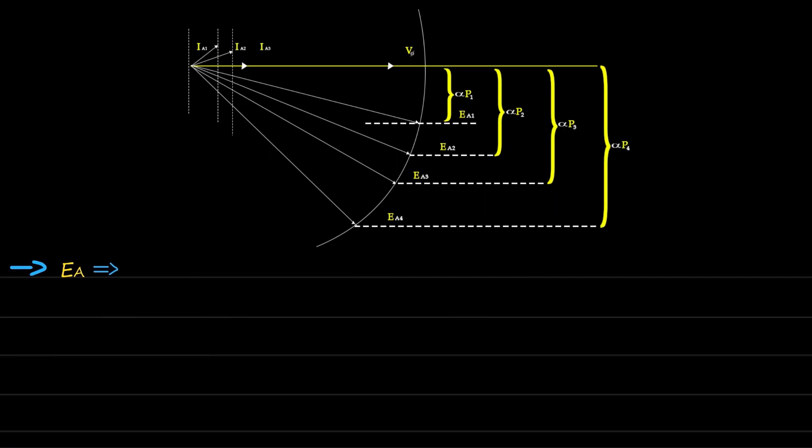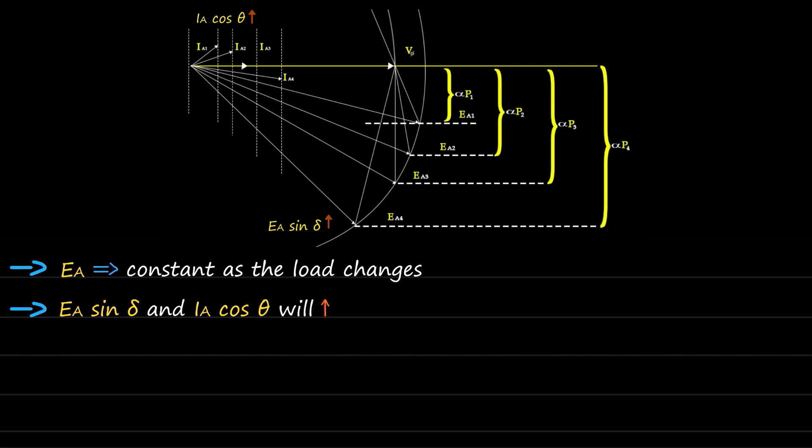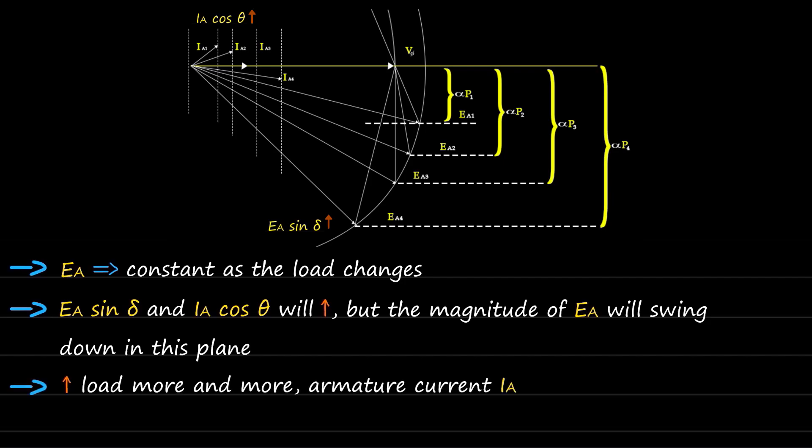Since speed is constant, the magnitude of Ea will be kept constant as the load changes. As the load increases, the distance proportional to power, that is Ea sin delta and Ia cos theta, will increase. But the magnitude of Ea will swing down in this plane. Increasing load more and more, armature current Ia also increases.